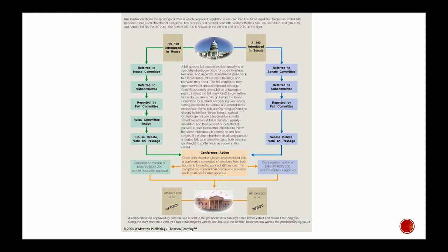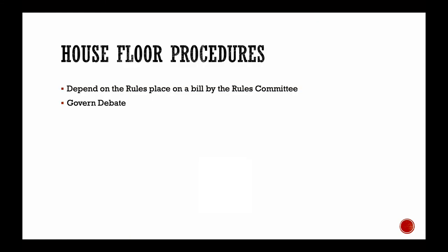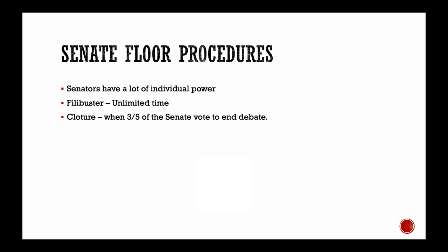So that's the sort of long-winded version of how a bill becomes a law. But I strongly recommend you continue to look at this visual because it's probably the best, most straightforward. So the House floor procedures, as we talked about, depend on the rules placed on the bill by the Rules Committee. And those rules govern debate. And that's really the important distinction in terms of the House process. And like I said about the Senate, the important distinction in the Senate process is that senators have a lot more individual power and they have unlimited time to debate. And that's part of the rules of the Senate.